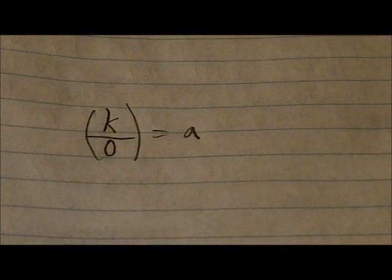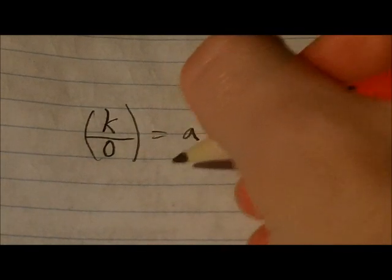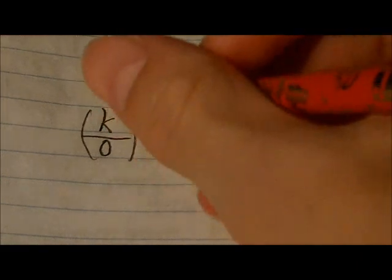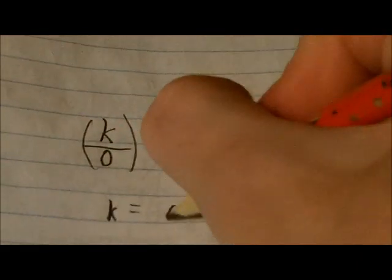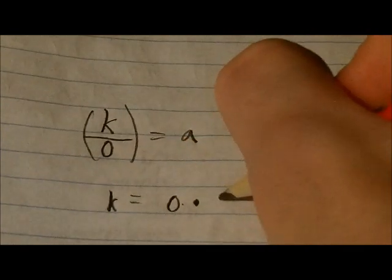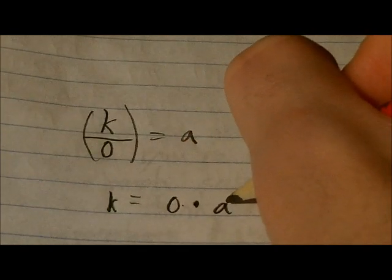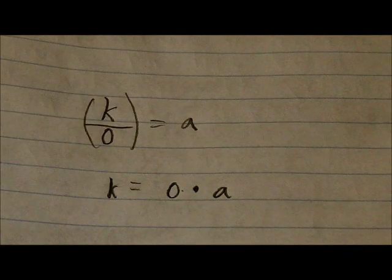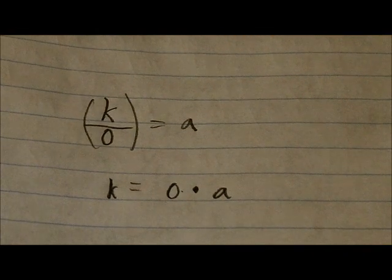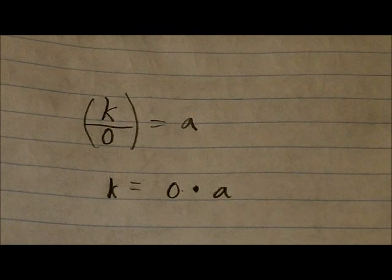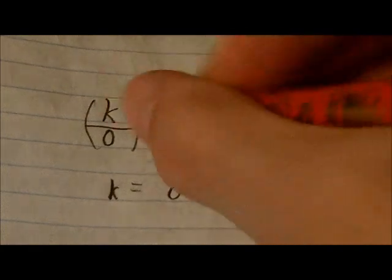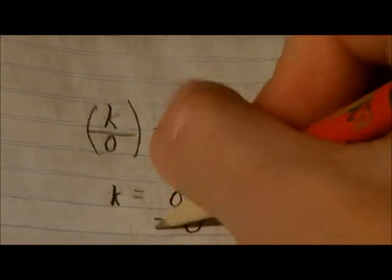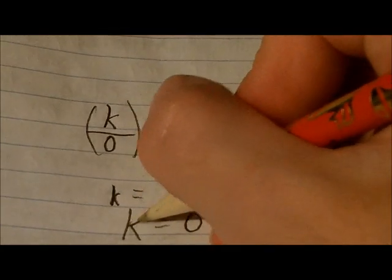The problem here is that if we were to solve for k in this case, we would say that k is equal to zero times a for some real numbers k and a. Really, for any real numbers k and a. However, clearly this does not work, because in this case, zero times anything would be equal to zero, and k must equal zero.